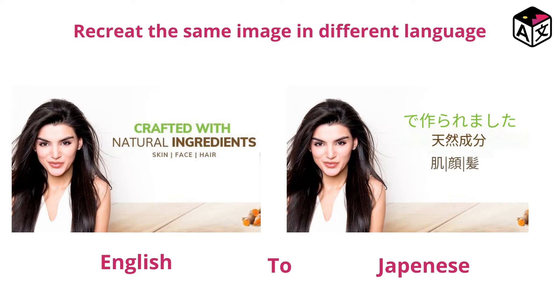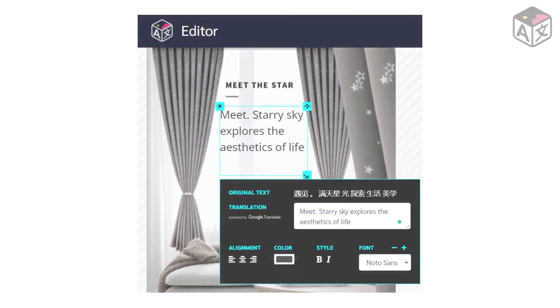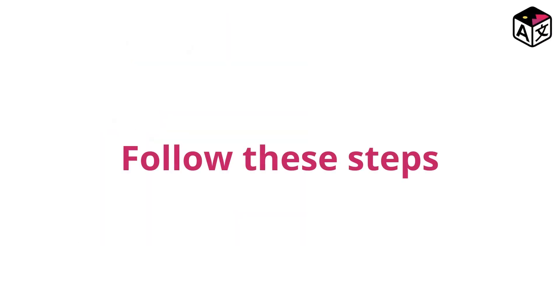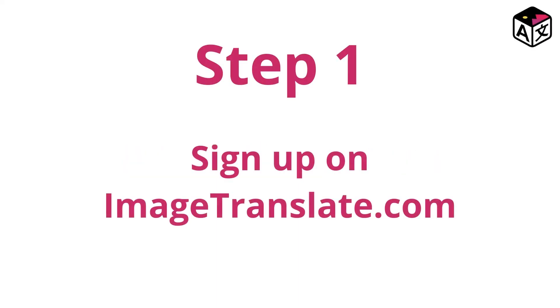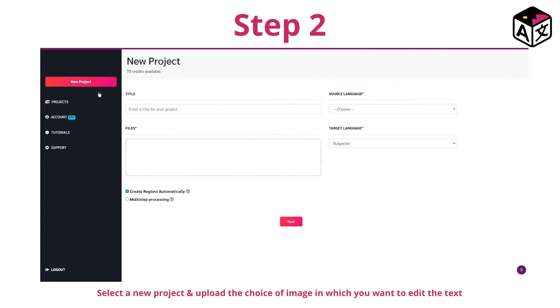With the benefit of translating text in the image and recreating the same image into different languages, you can also use Image Translate as a tool to edit text in an image. Just follow these simple steps. How to edit text in image without Photoshop. Step 1: Sign up on ImageTranslate.com. Step 2: Select a new project and upload the image in which you want to edit the text.